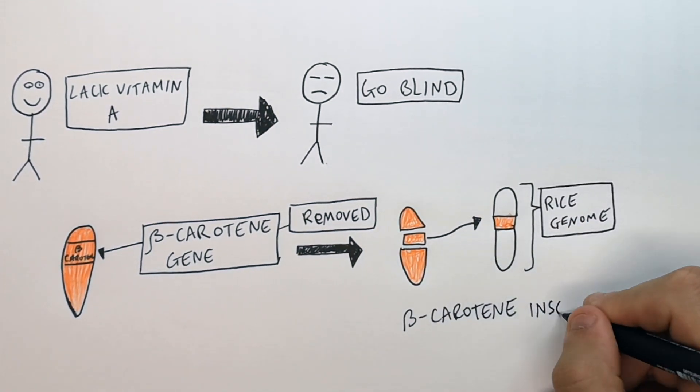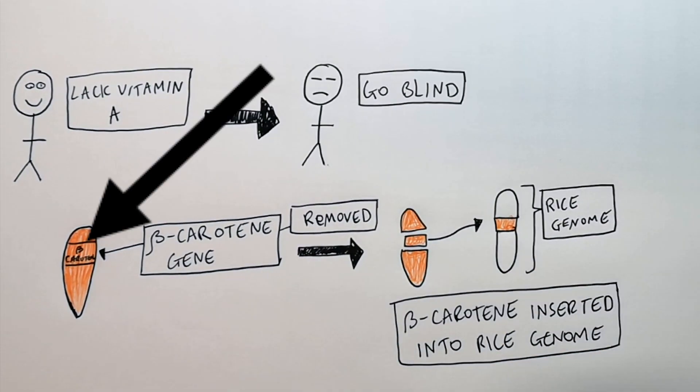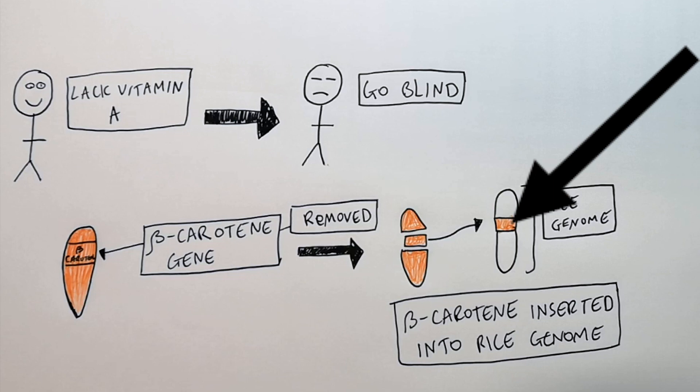Beta carotene is inserted into the rice genome. You will insert that beta carotene gene from the wheat into the rice genome.